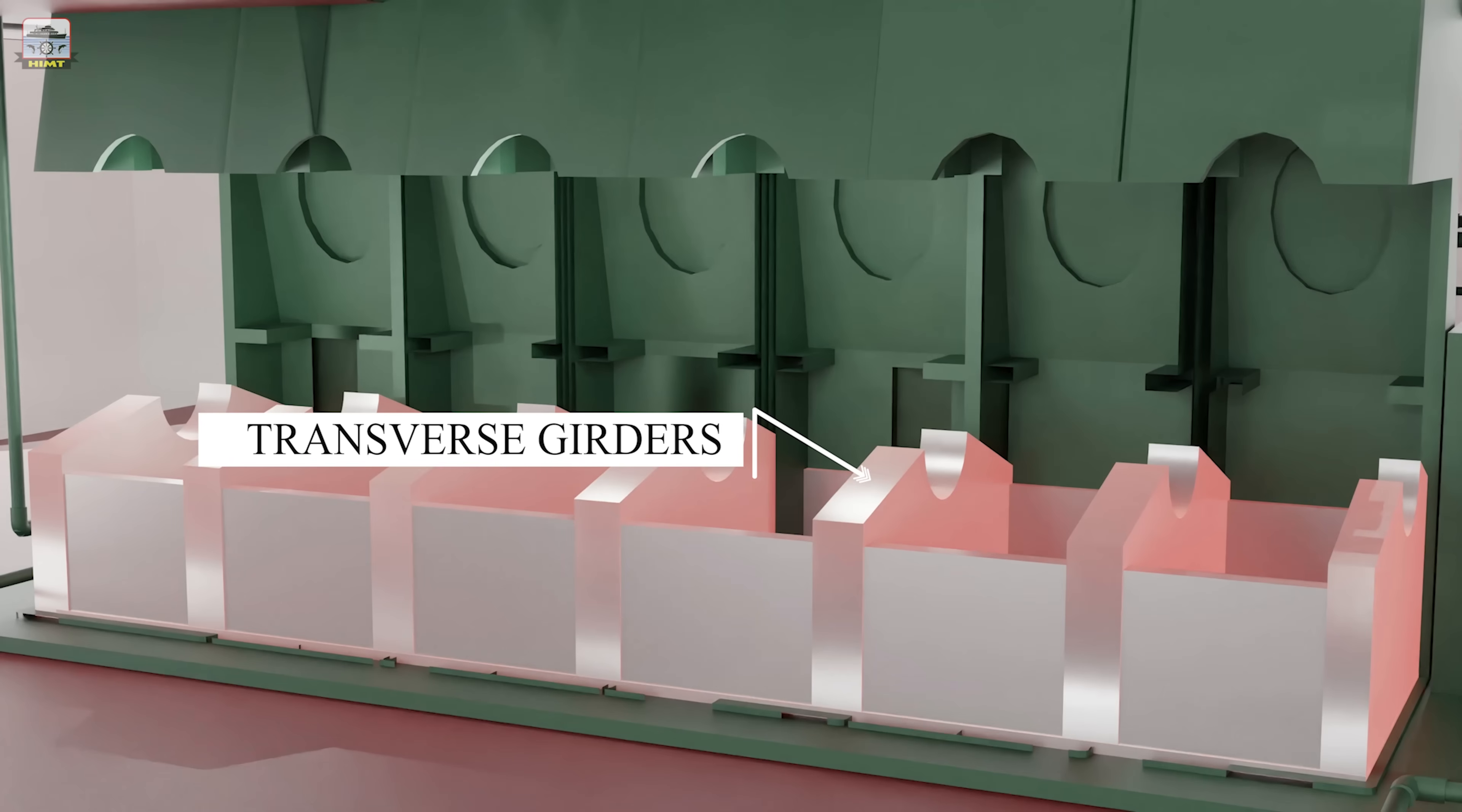The transverse girders are positioned on either side of the crank throw of the crankshaft. A bearing support made of cast steel are embedded on these transverse girders to support the crankshaft.